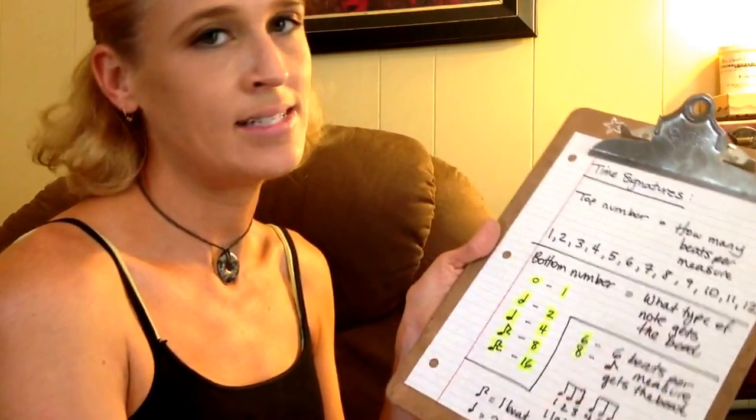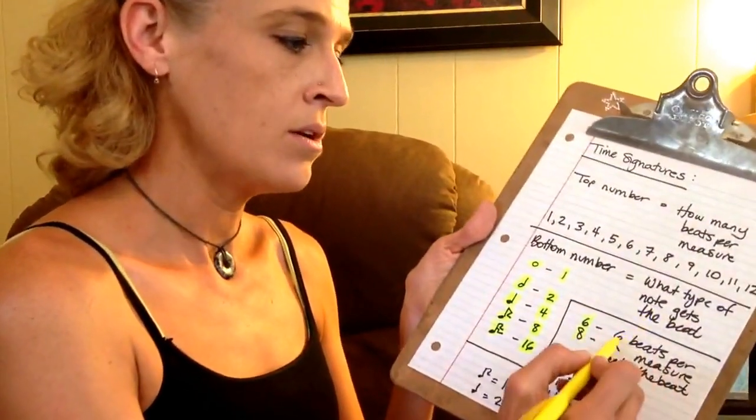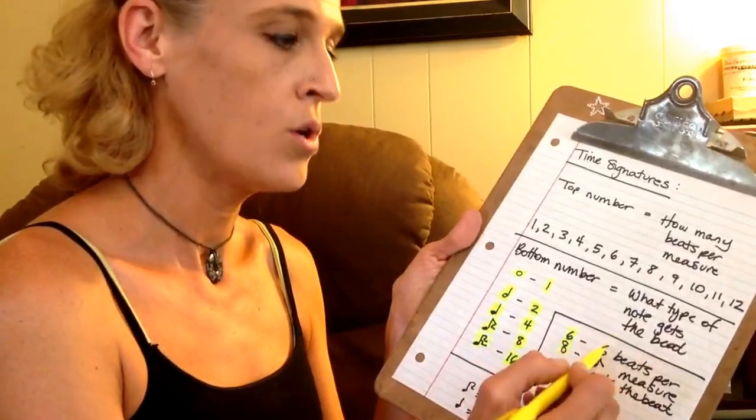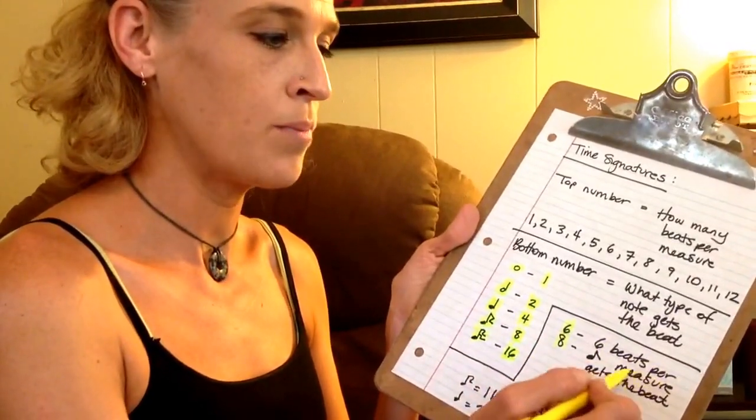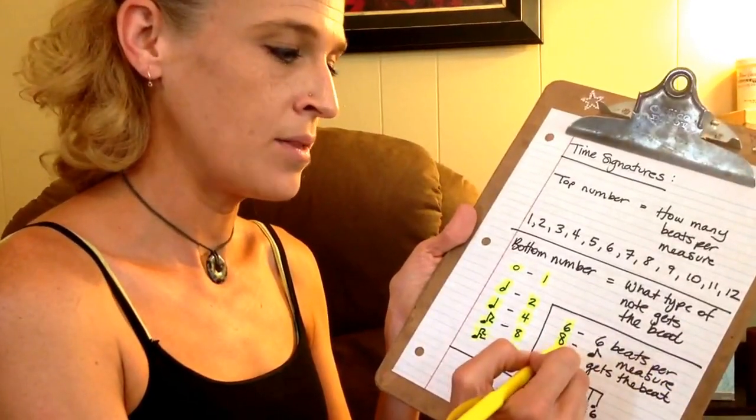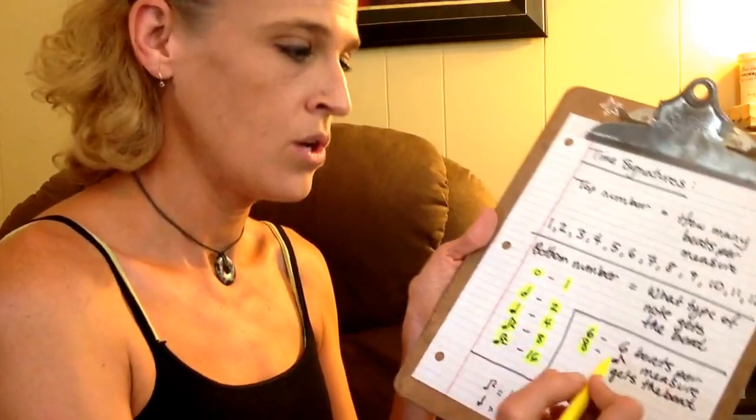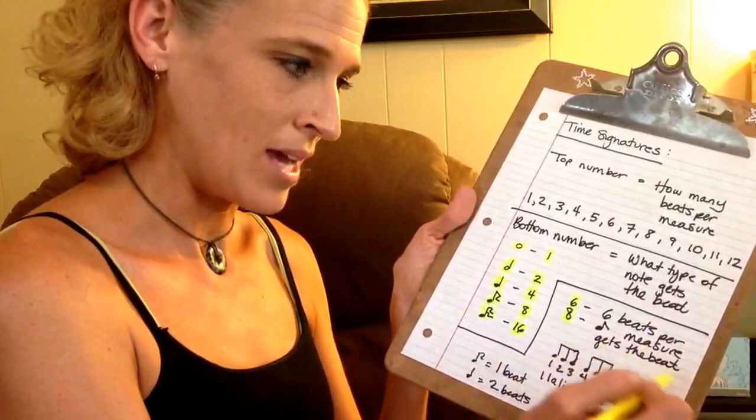Now, if we're looking specifically at 6/8 time, the top number means how many beats per measure - so there are 6 beats per measure. And the 8 on the bottom means the eighth note gets the beat.